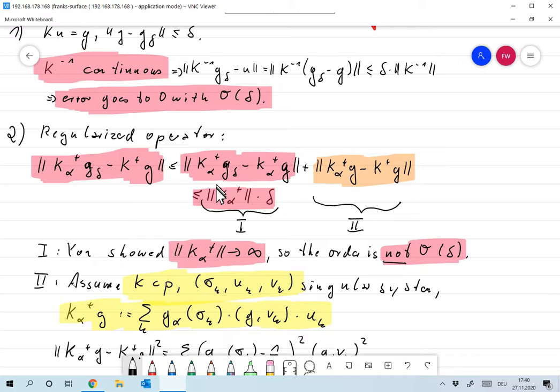Now, what is the order of that? So how does that go to zero with delta? And you already showed that the norm of K alpha plus goes to infinity. I think you did that in the exercises. So definitely the order is not O of delta, because choosing G delta correctly, this error bound is actually sharp. And so if you have norm K alpha plus times delta, K alpha plus goes to infinity, then of course it's not capital O of delta.